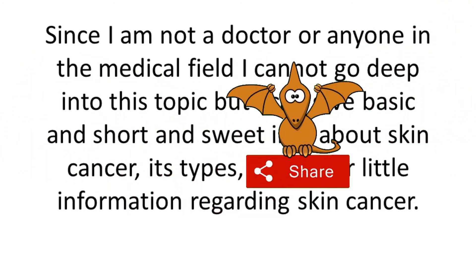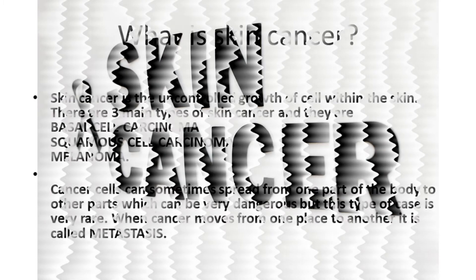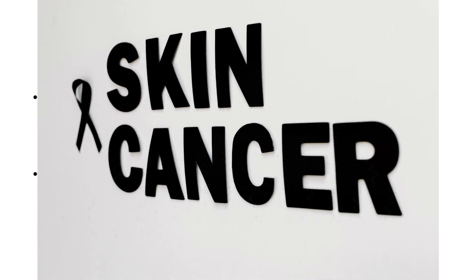First, let's talk about what skin cancer is. Skin cancer is the uncontrolled growth of cells within the skin. There are three main types: basal cell carcinoma, squamous cell carcinoma, and melanoma. Cancer cells can sometimes spread from one part of the body to other parts, which can be very dangerous, though this type of case is very rare. When cancer moves from one place to another, it is called metastasis.